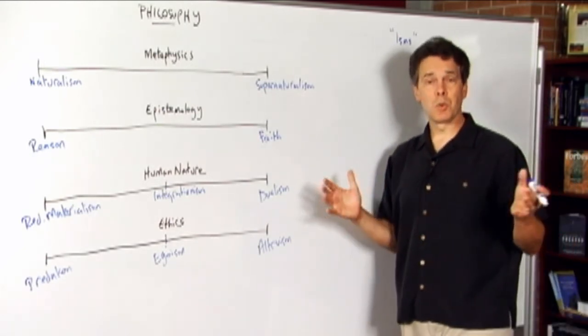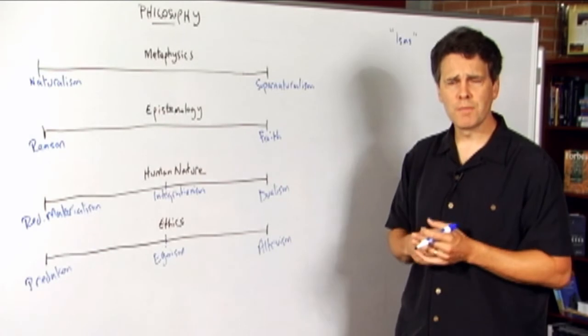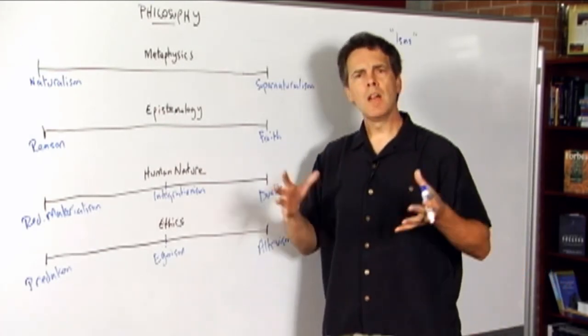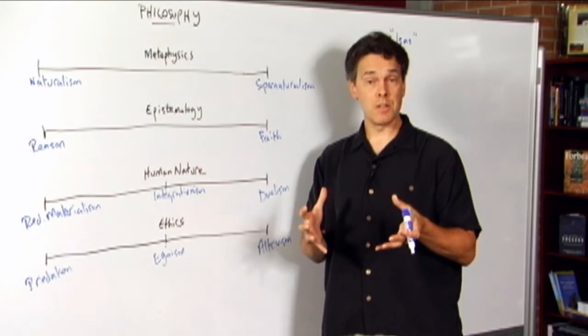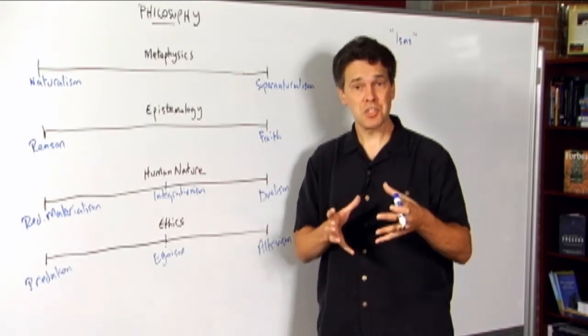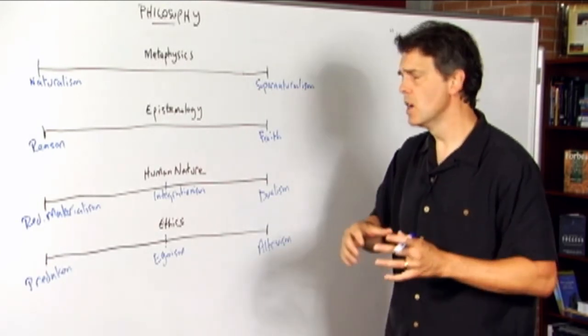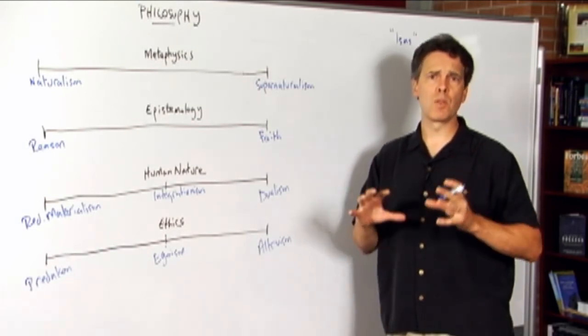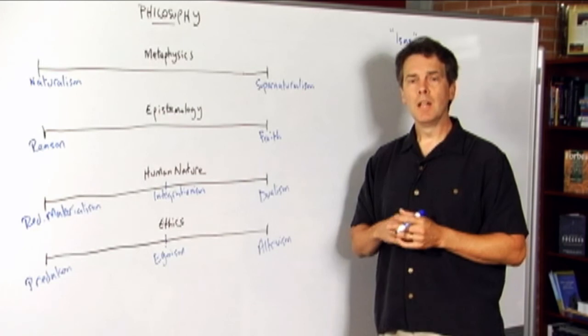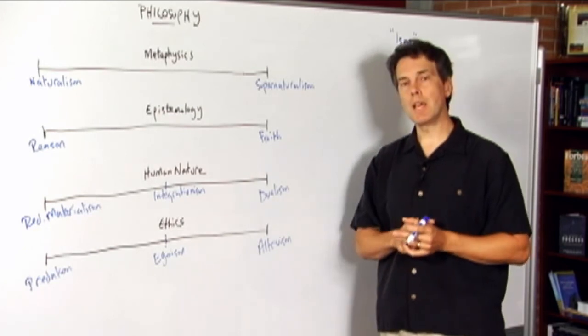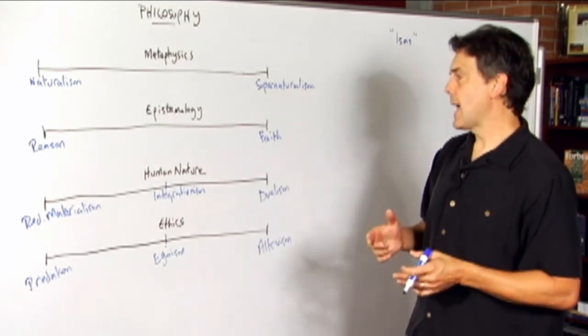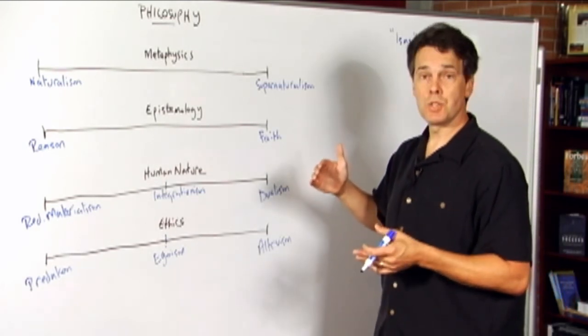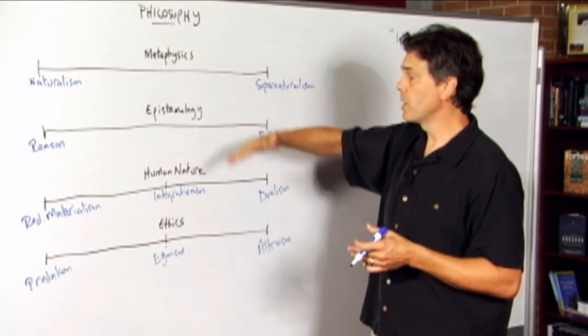So there might be 40, 50, 60 or 70 major issues in philosophy that one has to consider. One takes a position on all of them and then puts them together in a package, hopefully an integrated package or a consistent and coherent package. But that then becomes a whole philosophy, a philosophy of life or a philosophy of the universe. And then that philosophy is given a label. So what we're then going to be looking at are positions that are integrated positions of all of the sub-issues.